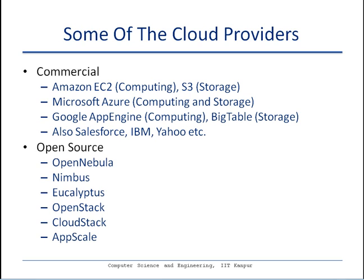In the open source space, there have been several projects that offer software allowing you to set up your own cloud infrastructure — for example, OpenNebula, Nimbus, Eucalyptus, OpenStack, and CloudStack all provide software you can use to set up your own infrastructure-as-a-service cloud. AppScale has been influenced by Google App Engine and is an open source implementation of very similar services that Google App Engine offers.